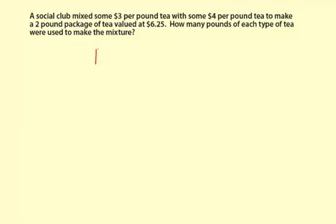I'm going to draw a little sketch here just to kind of visualize what's going on. There's some $3 tea plus some $4 tea. It's going to make a two-pound tea of $6.25. And of course, this is not a valid equation. This is just kind of giving me an idea.